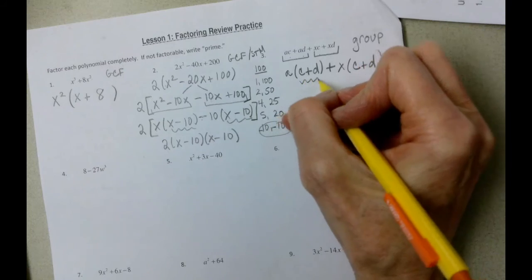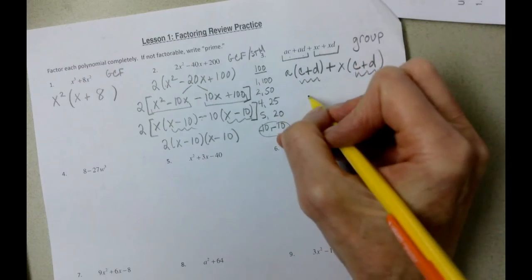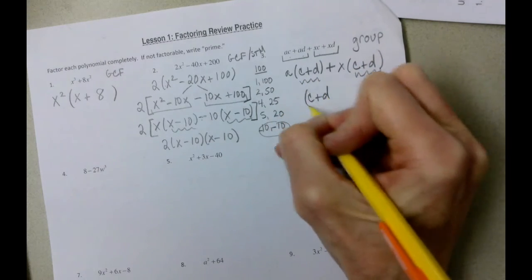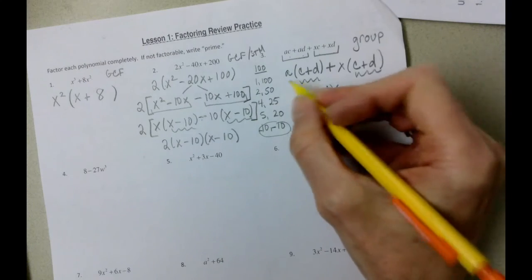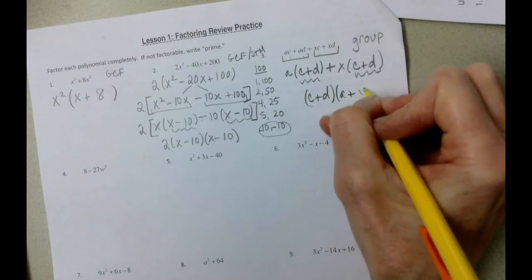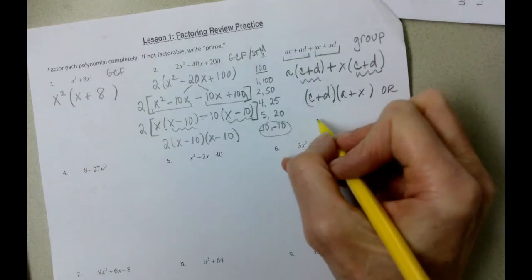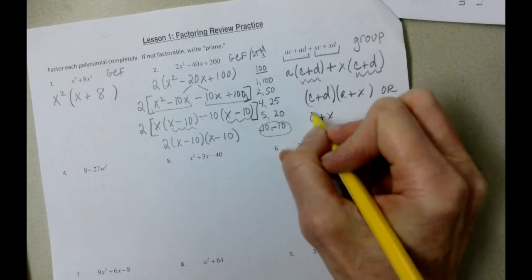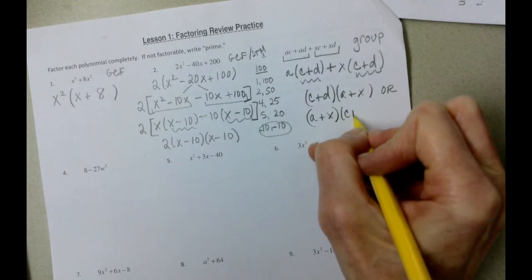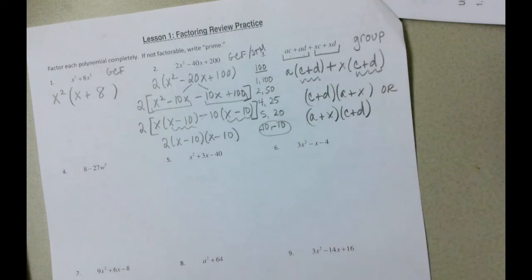And then what we have is we have a c plus d in the first group, a c plus d in the second group. So that's going to be common. And then a plus x. Reminder that you might have written the problem as a plus x times c plus d. That is okay as well.